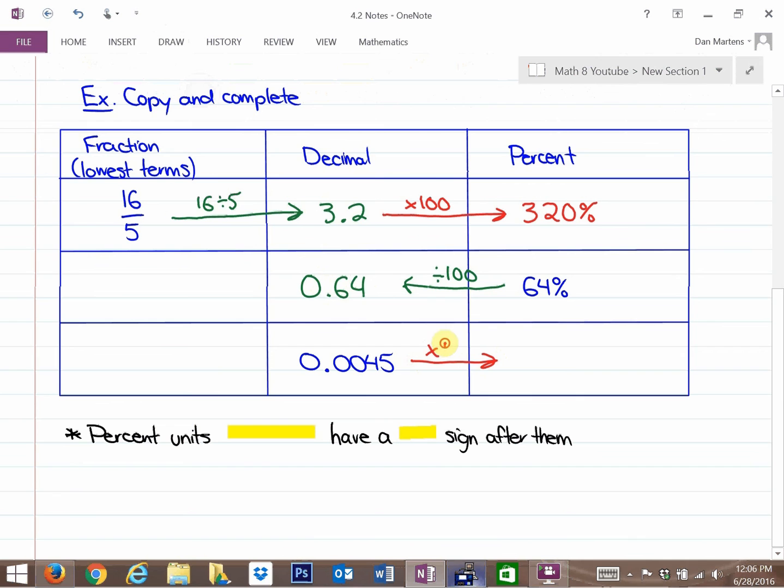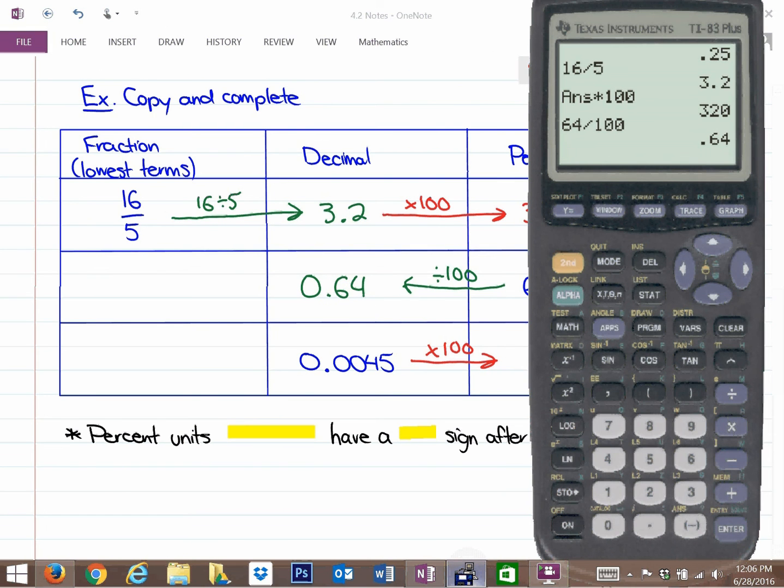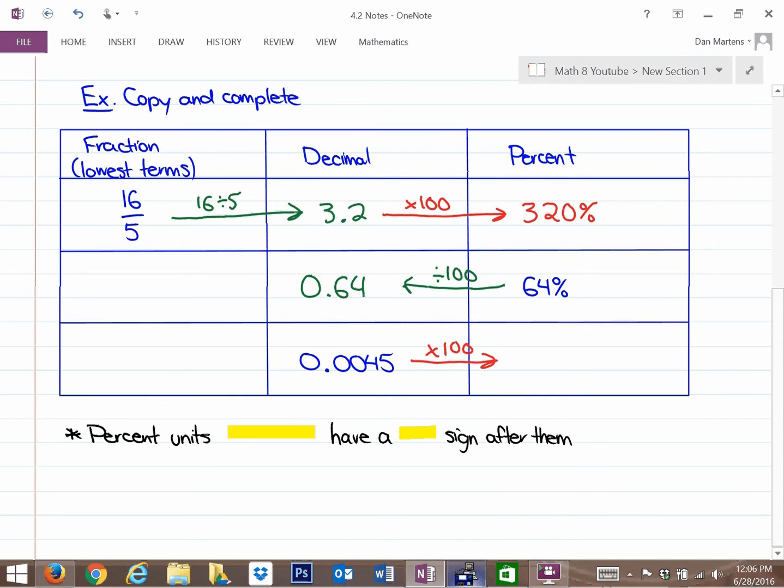So this decimal, 0.0045, you may think is 45%, but it's actually even less than one whole percent. So if we multiply that by 100 and move the decimal two places to the right, what you're going to notice is it's actually 0.45%, so it's less than 1%. That's absolutely fine.